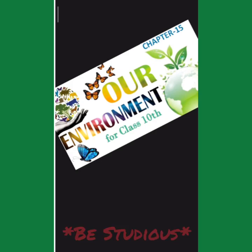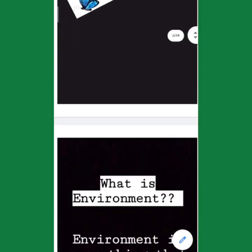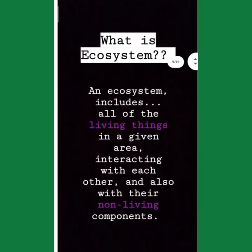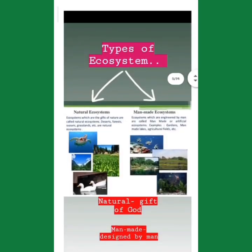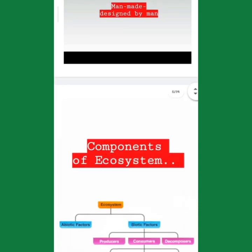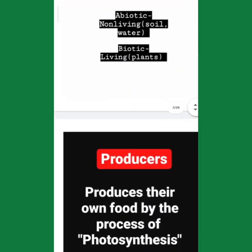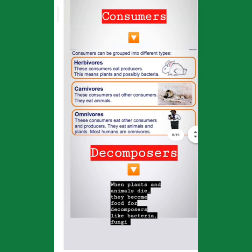In the previous videos we explained about this chapter — what is the definition of the environment, what is the ecosystem, what are the types of ecosystem, what are the producers, what are the consumers, and what are the decomposers.